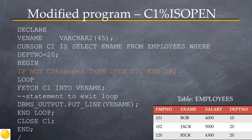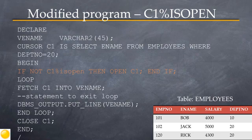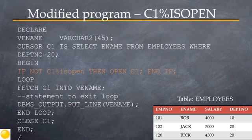This example program shows the use of the %ISOPEN attribute. The variable vename and cursor c1 are declared as before. However, the OPEN statement is now part of an IF condition. The IF condition checks to see if the cursor is already open or not, and will open c1 only when NOT %ISOPEN is true. The rest of the program is the same as previously discussed.